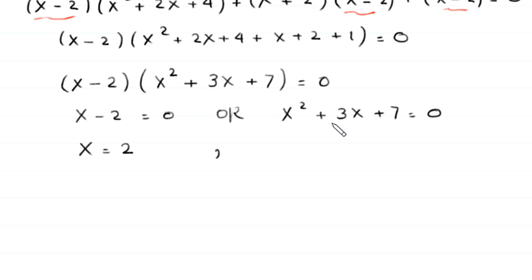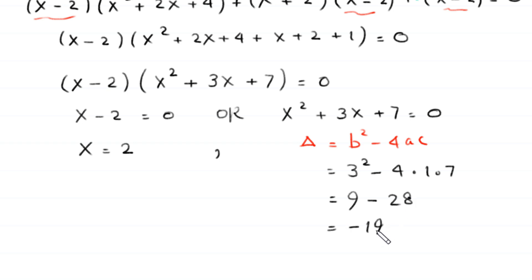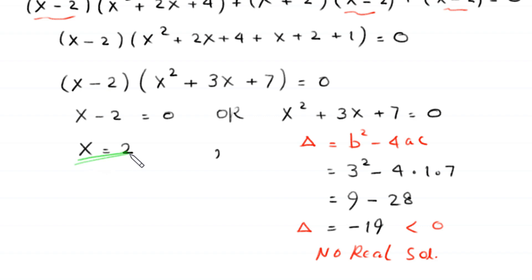From the quadratic x squared plus 3x plus 7 equals 0, we check the discriminant delta equals b squared minus 4ac. Here b is 3, a is 1, c is 7, so delta equals 9 minus 28 equals negative 19, which is less than 0. This means no real solutions come from this equation, so we accept only x equals 2.